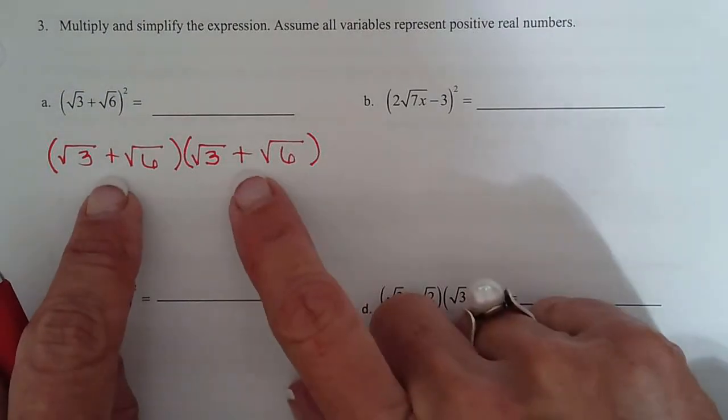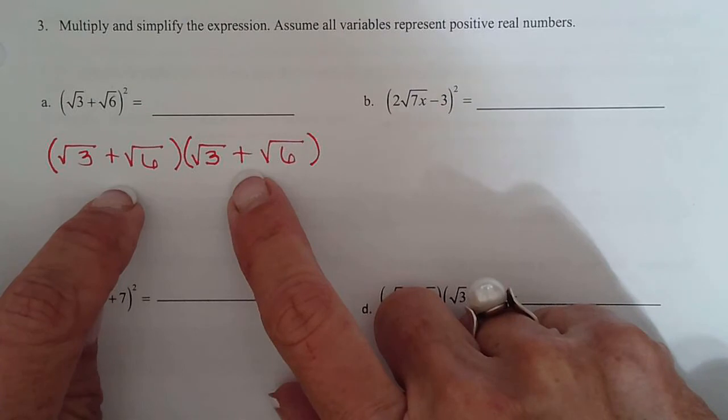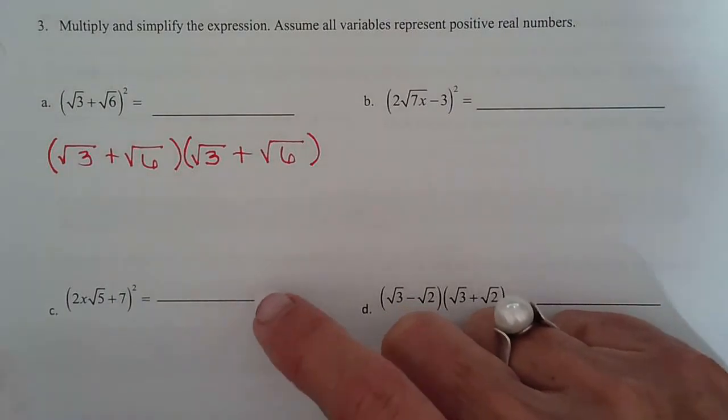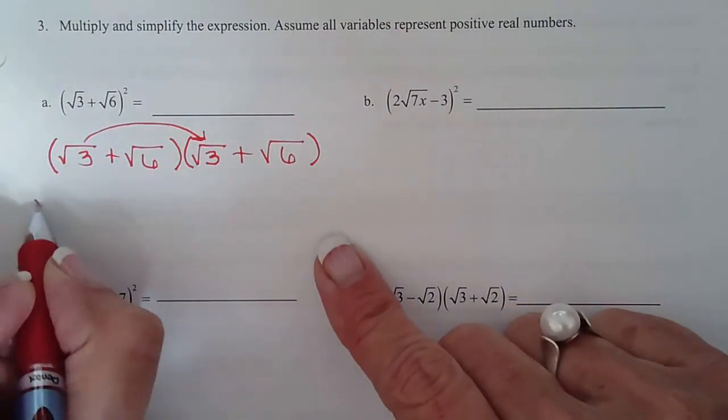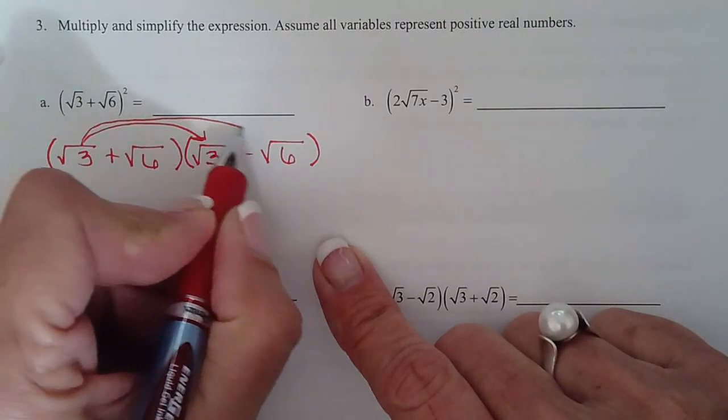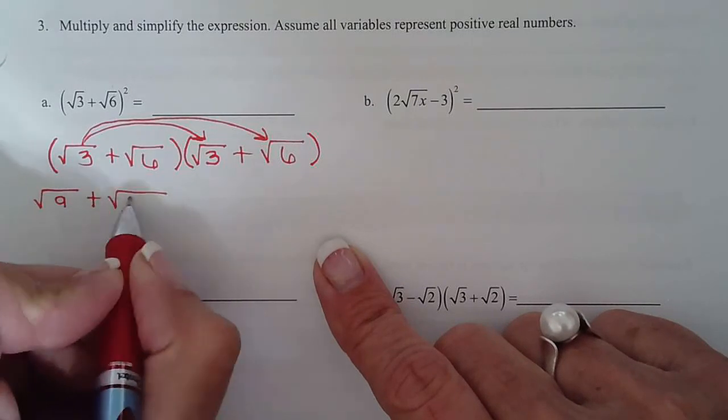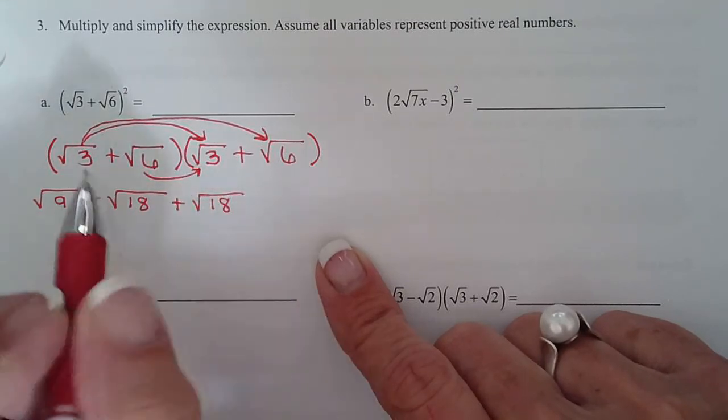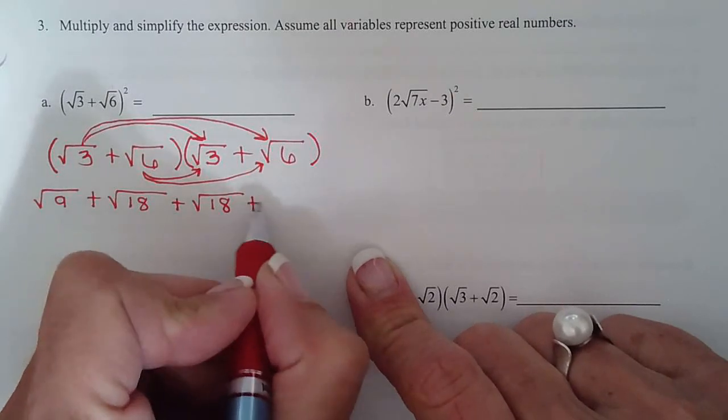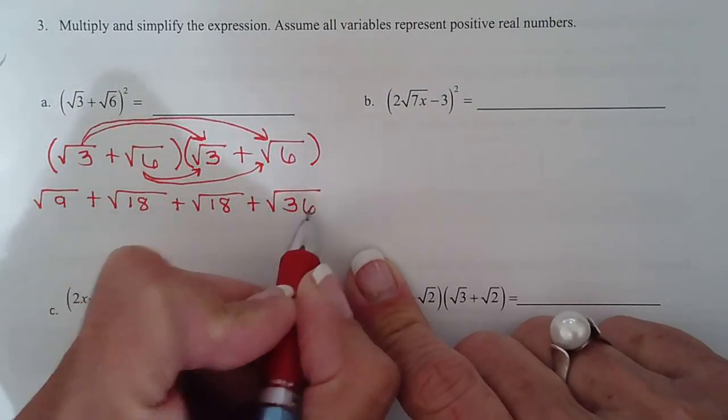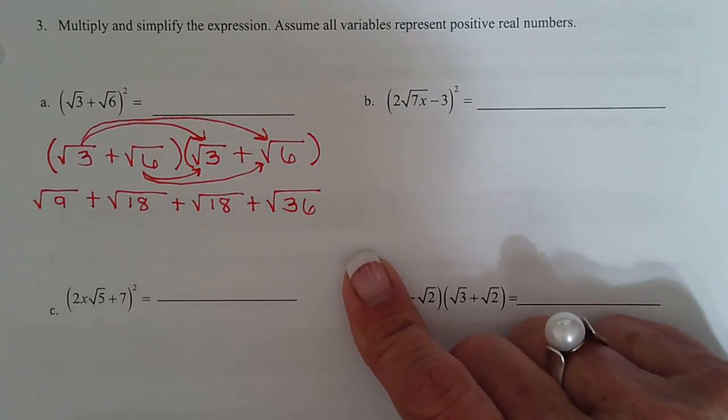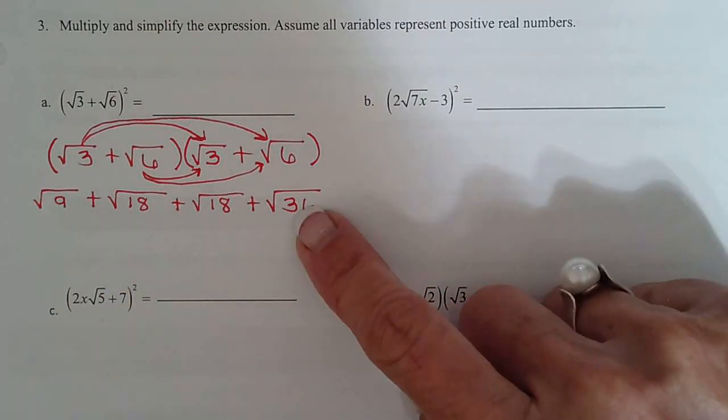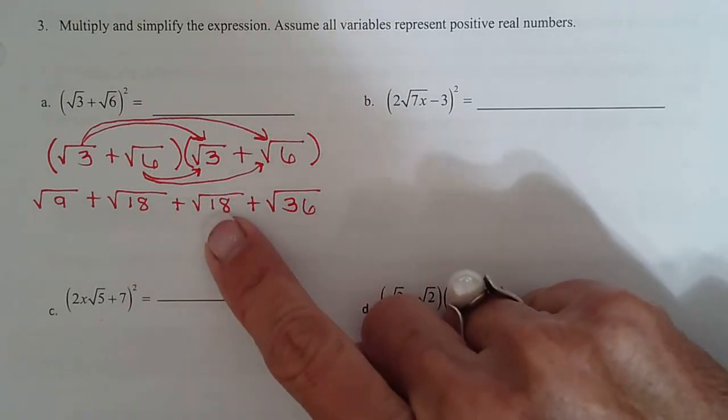Notice these are not conjugates like some we were doing earlier. So the middle terms will not cancel. They only cancel when we have conjugates. So this is a full out FOIL problem. From F we get square root of 9. From O we get plus square root of 18. From I we get plus square root of 18. From L we get plus square root of 36. If you look down the line you should recognize that every one of those radicals simplifies. Square root of 9 is 3, square root of 36 is 6.